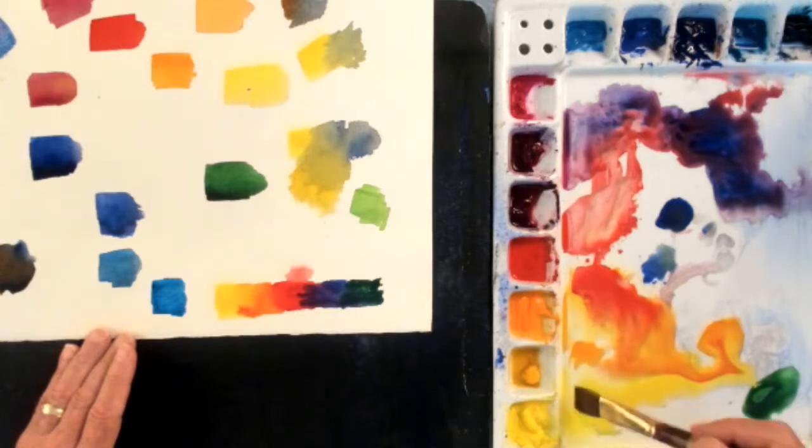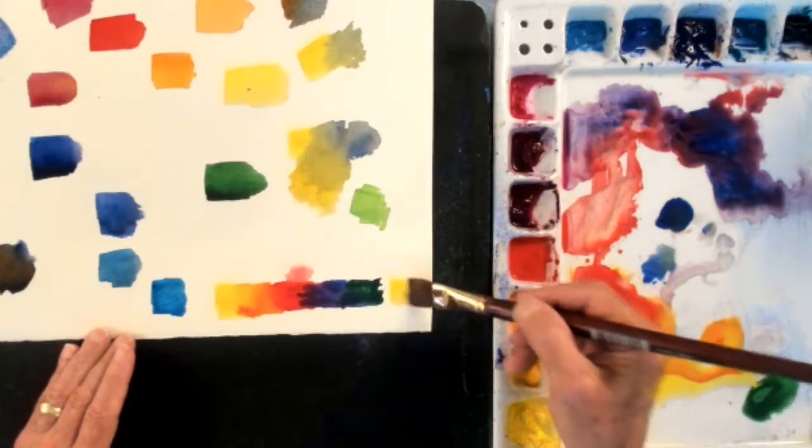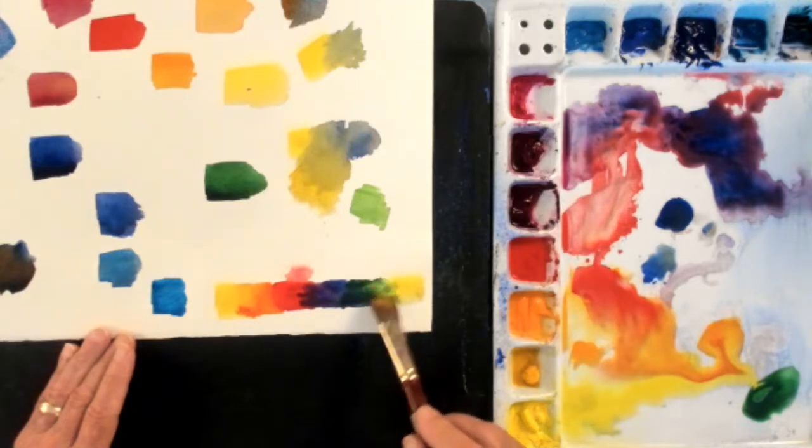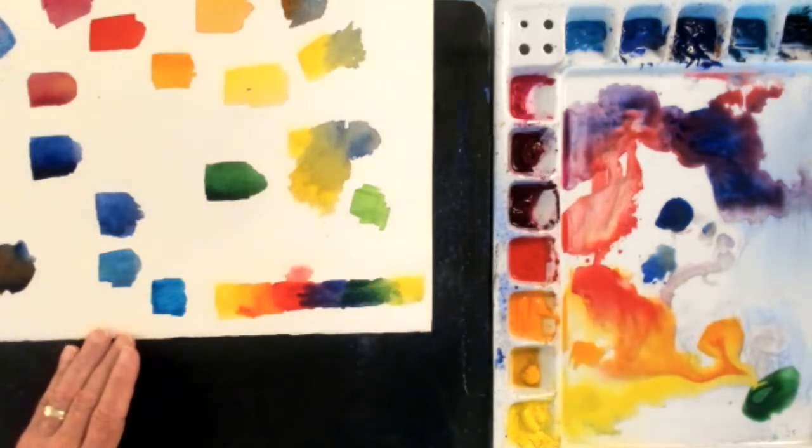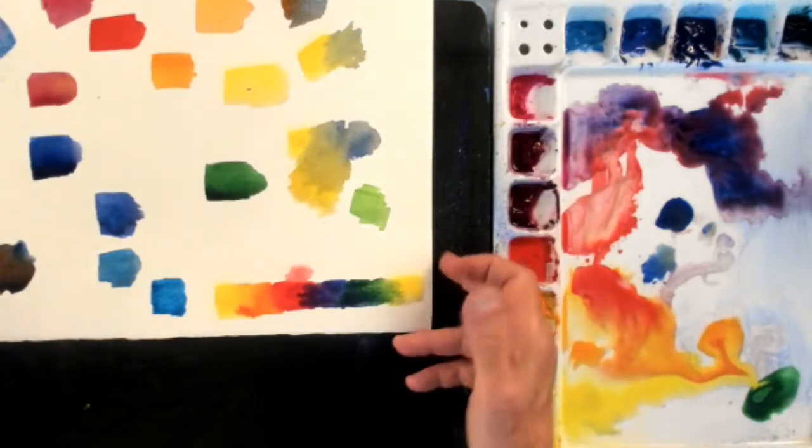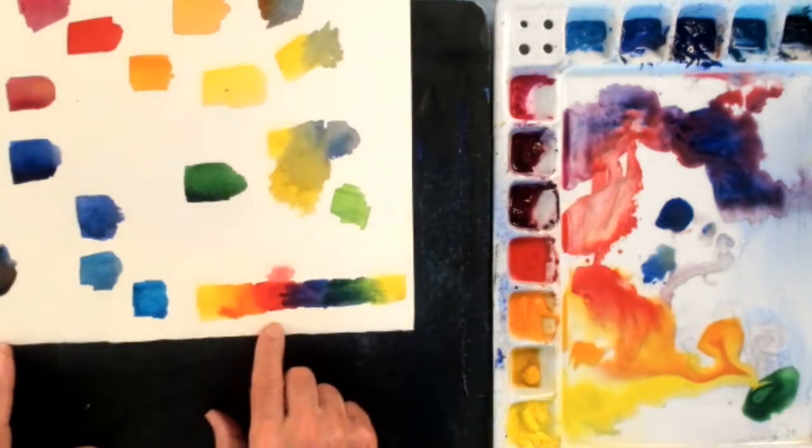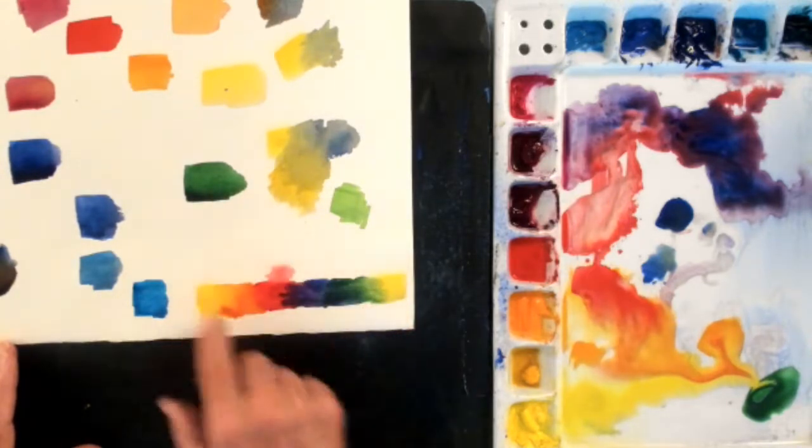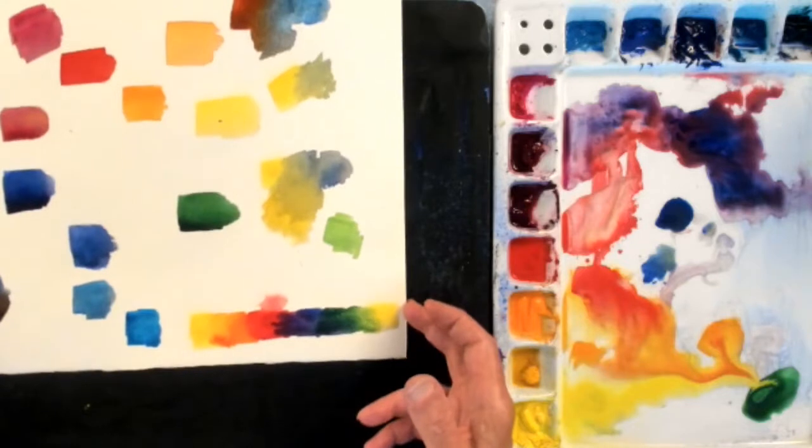And if I want to complete the circuit, I go back to yellow again. So there I've gone around the color wheel. I've gone from yellow to orange to red, from red to purple, purple to blue, blue to green, and then from green to yellow. And it goes on and on and on.